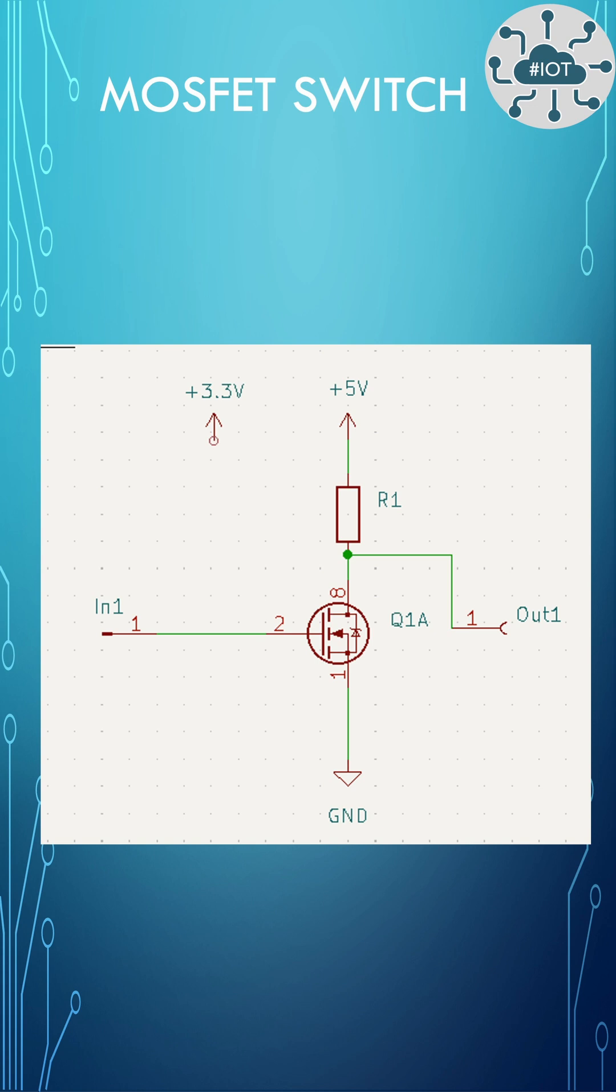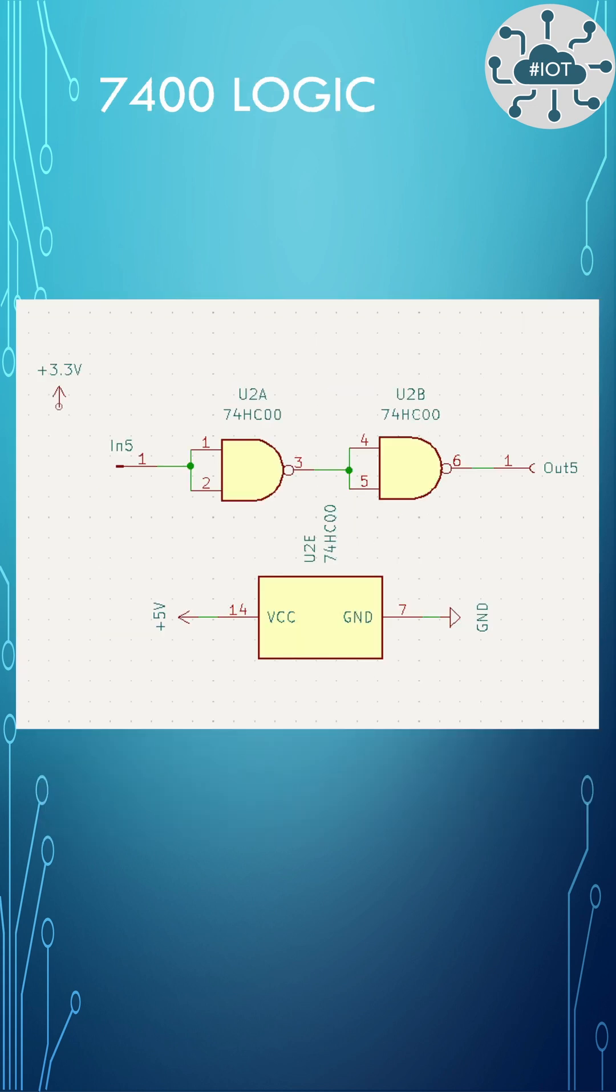This could be as simple as a MOSFET switch circuit to drive 5 volt output. Though you can also do this using 7400 TTL logic, as the output of the Pico falls within the valid range for TTL inputs. So using a pair of NOR gates I can generate a 5 volt signal.